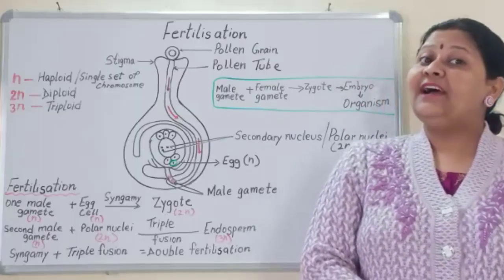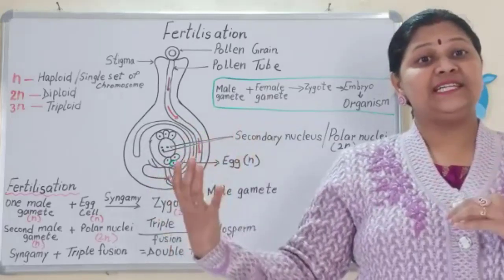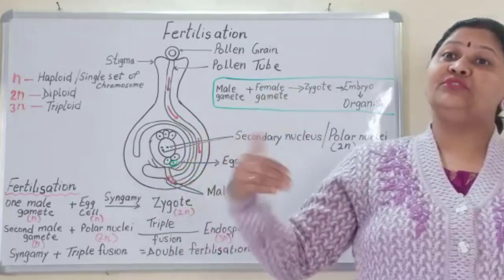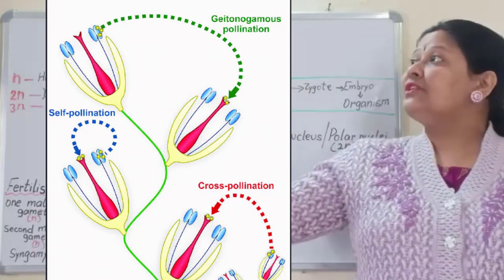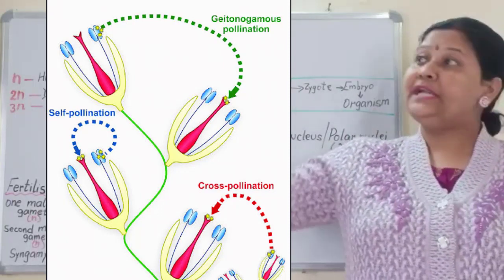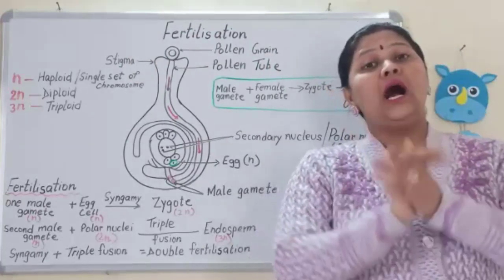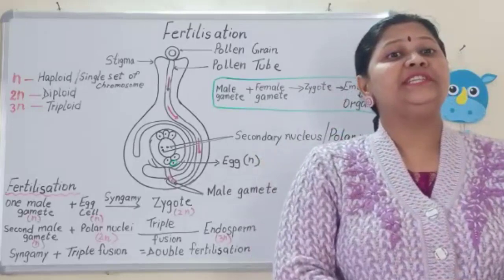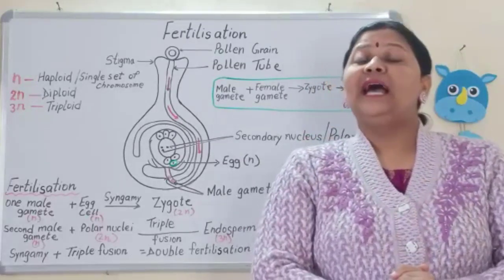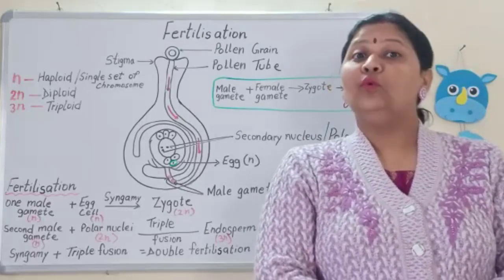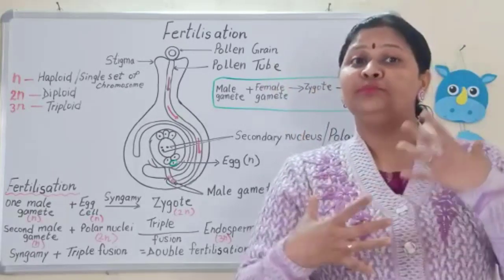Now we have to study about fertilization and how it is initiated. In the process of pollination, what we have studied is the transfer of pollen grains from the anther to the stigma of the flower. Now pollen grains have reached the stigma. We have to learn how fertilization takes place once the pollen grain reaches the stigma. I would like to explain the structure of the ovule and also the structure of pollen grains so that the process will be very clear.